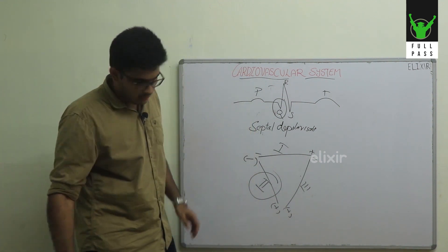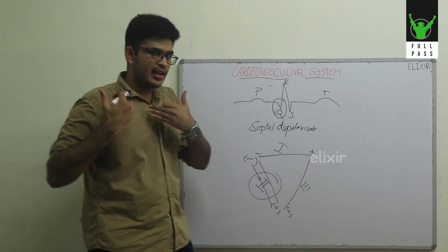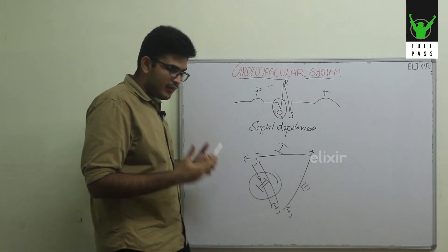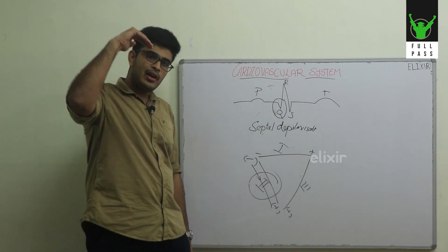You can see the direction of the current is from negative to positive. That is the direction of your depolarization. By convention, this direction is taken as positive. Any impulses traveling along this direction are taken as positive, and any impulses traveling against this direction are taken as negative.